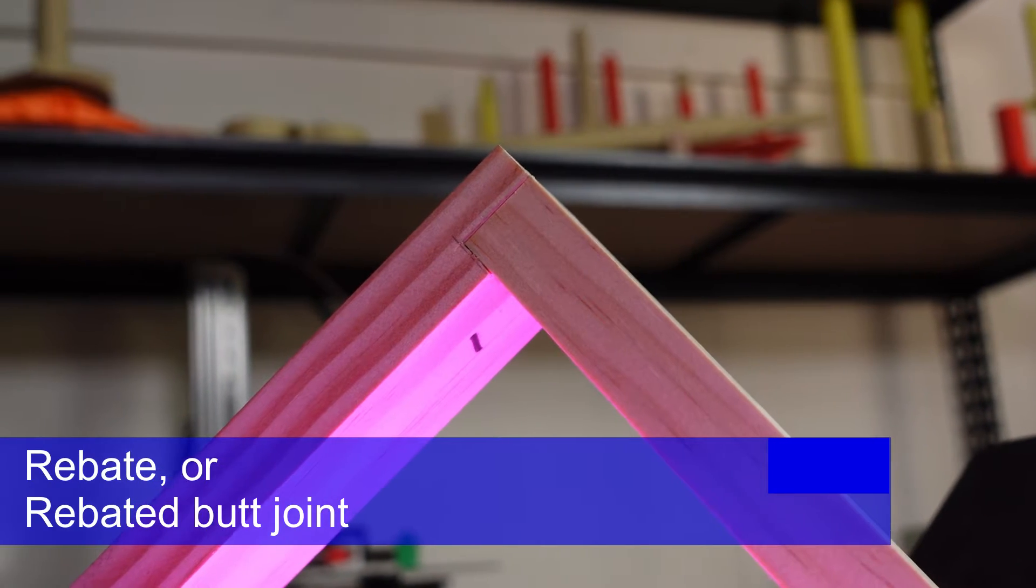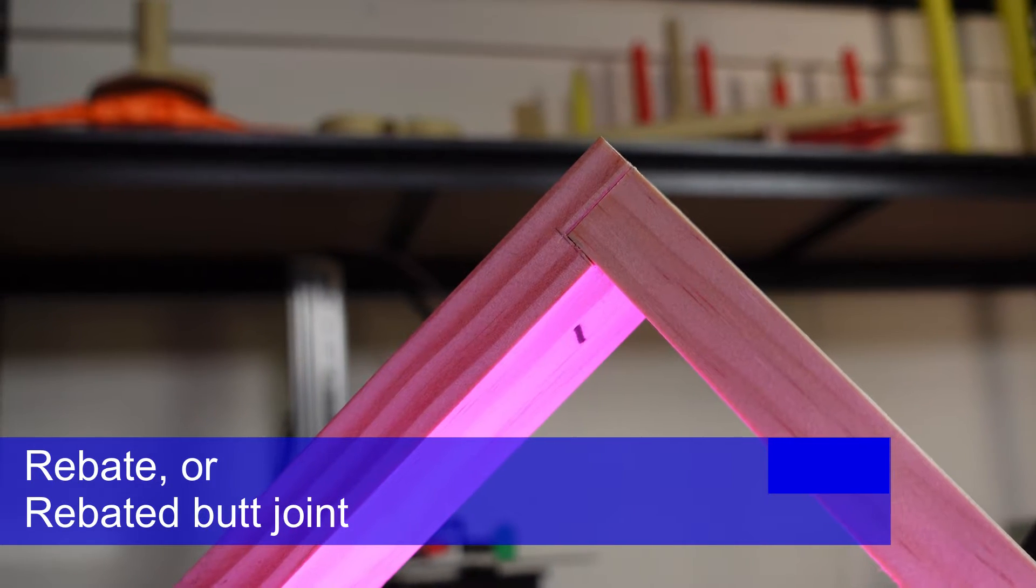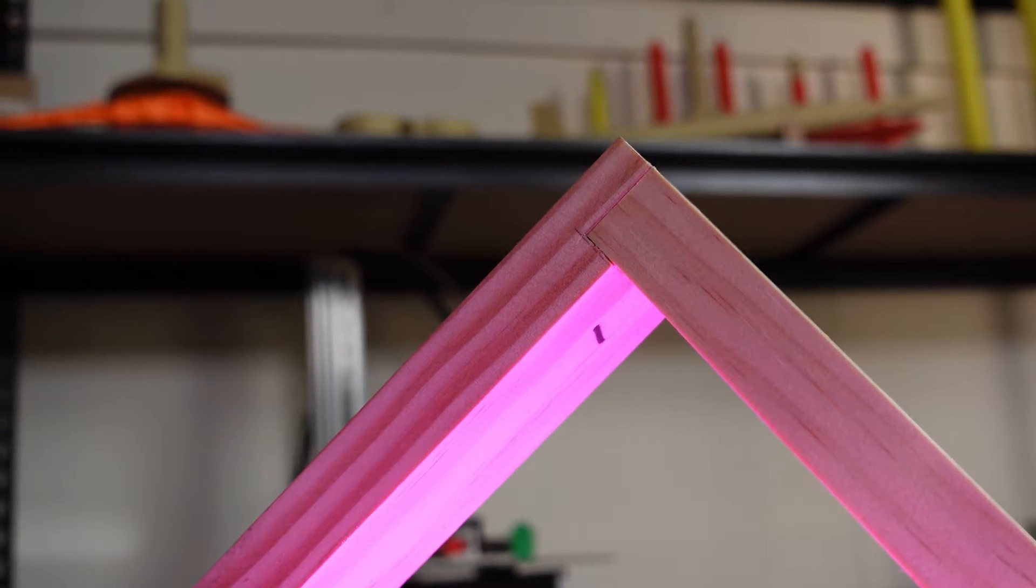This is the rebate joint or rebated butt joint. One of the simplest methods of joining timber, it's used in a wide variety of projects large and small.